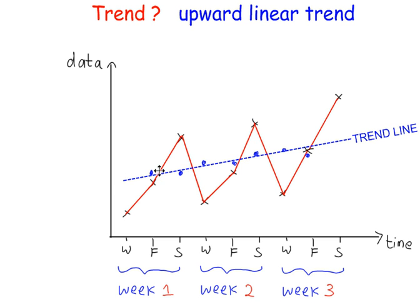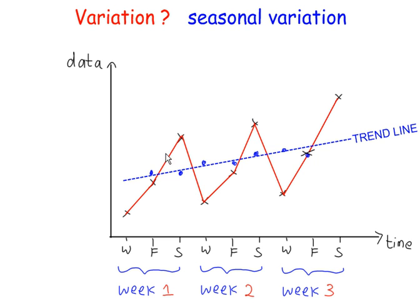This time series shows an upward linear trend. We also have this regular predictable pattern in this time series. This is called a seasonal variation.